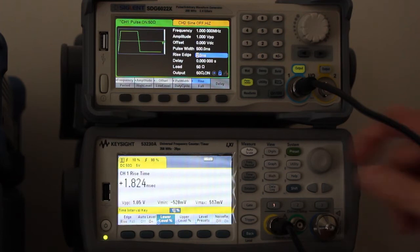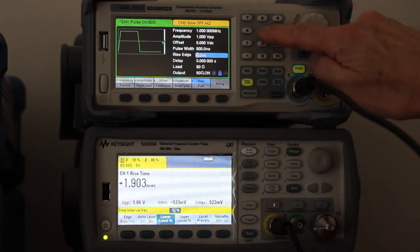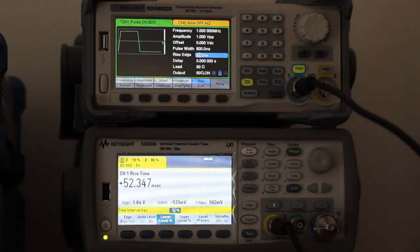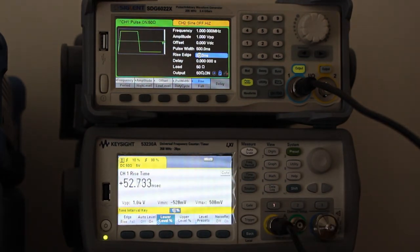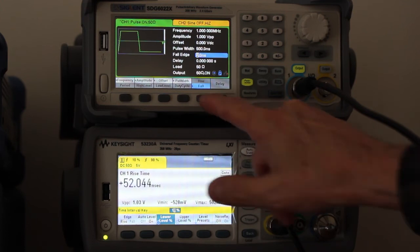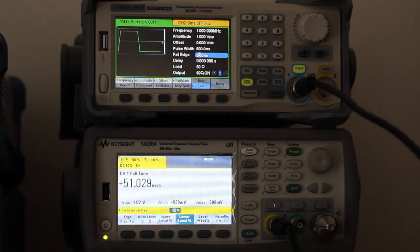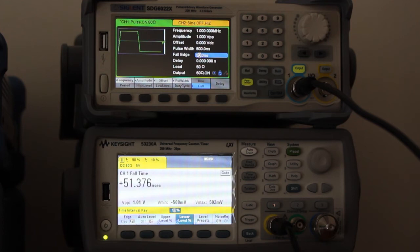Let's make an experiment here changing the rise time to 50 nanoseconds. Now it's measuring about 53, which is less than 5 percent of error, which is good. And let me change also the fall time to 50 nanoseconds. Fall time 51.3, very good.